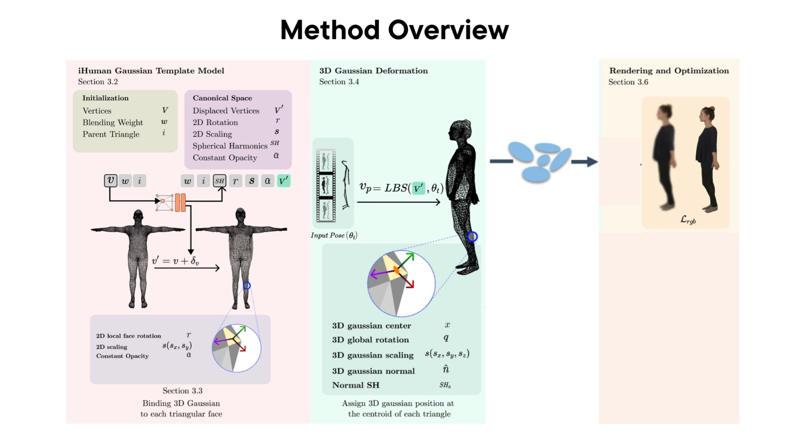We perform Gaussian rasterization and optimize on photometric loss. Again, we do another forward pass by encoding the normals as spherical harmonics and get the normal map of Gaussians for the given camera position and view direction. Then we perform normal map optimization.